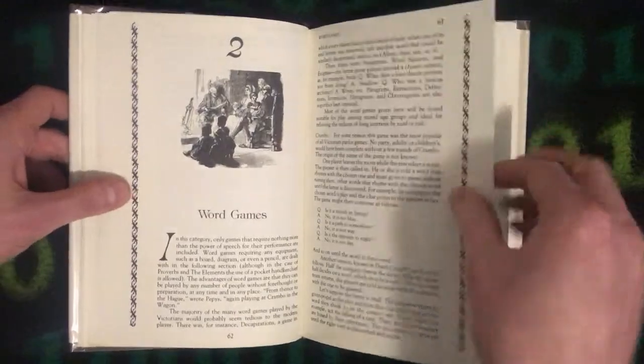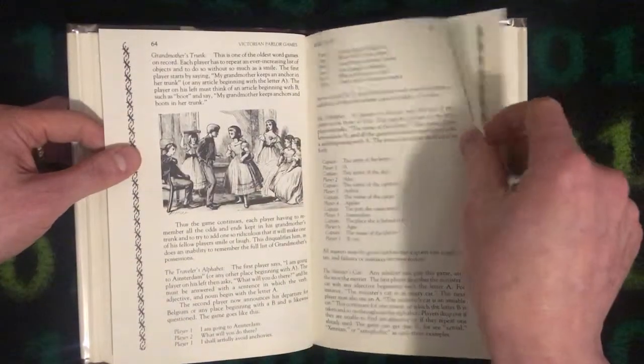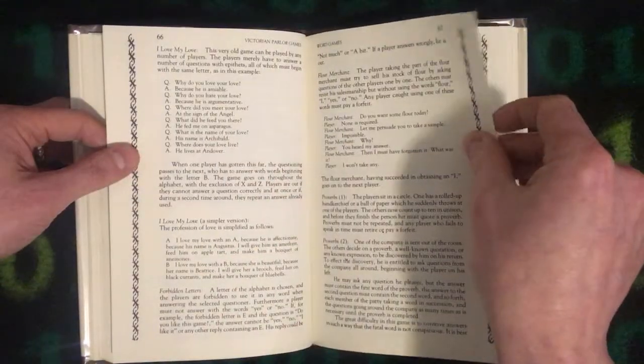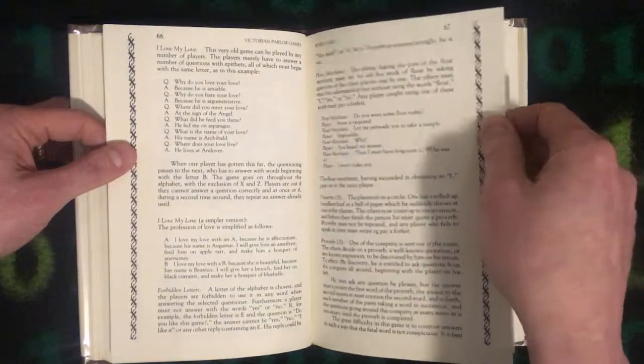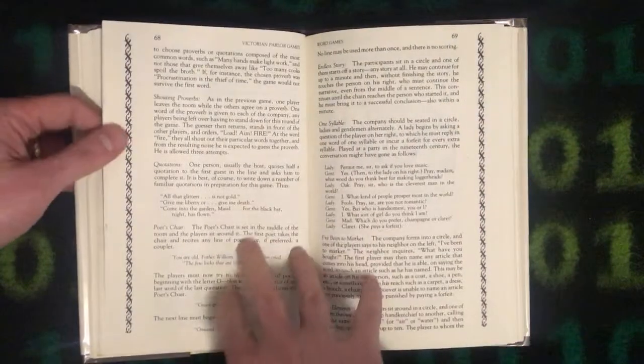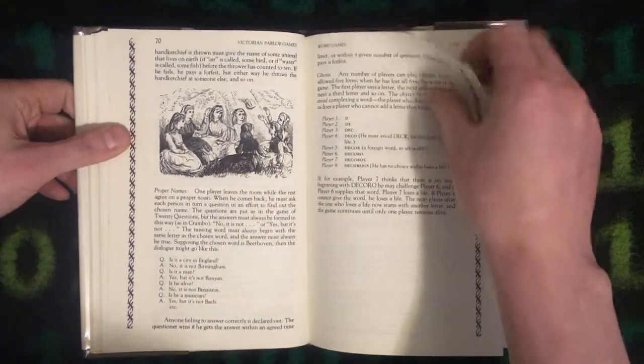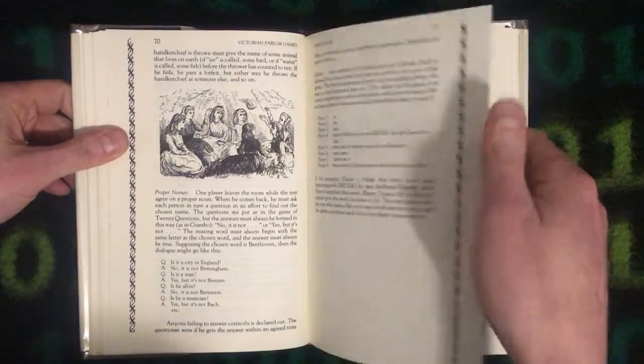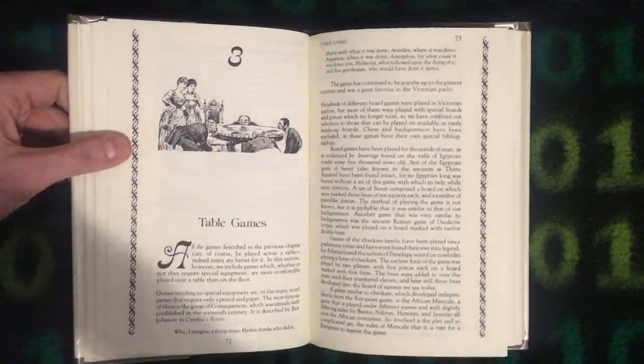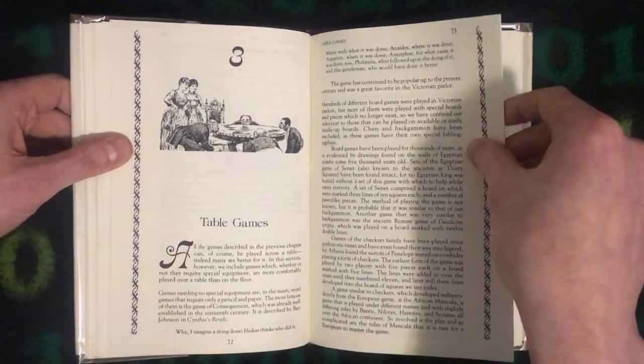Then Chapter 2 is Word Games. I Love My Love. Proper Names. And then Chapter 3 is Table Games.